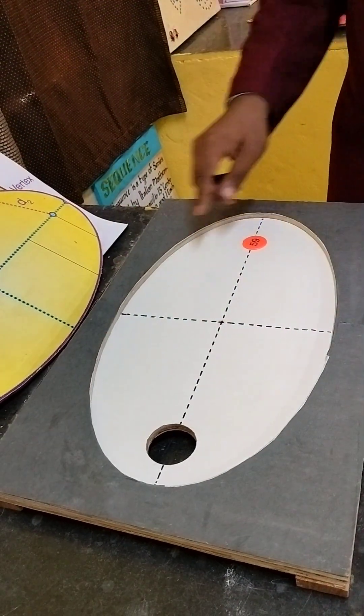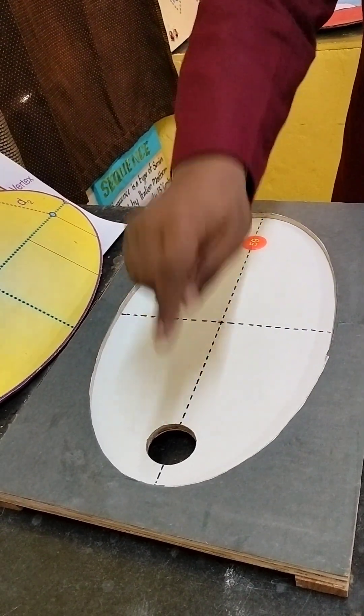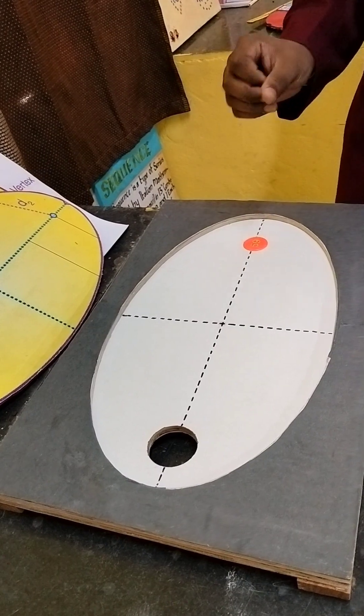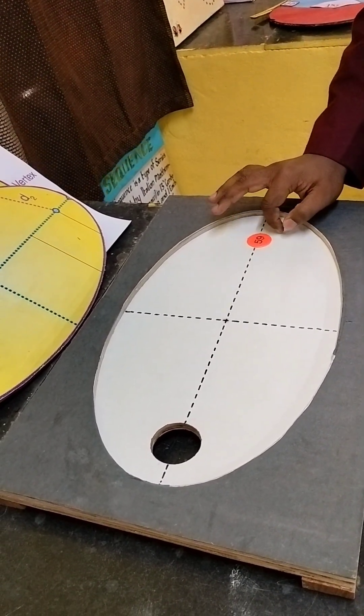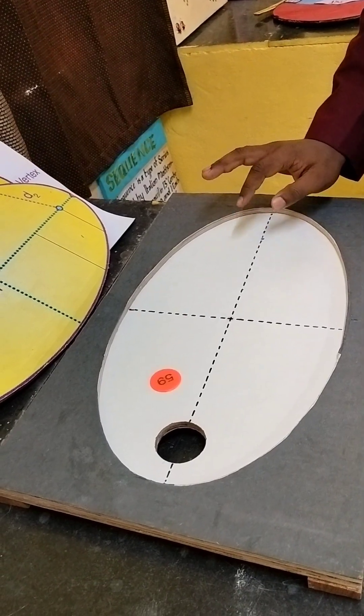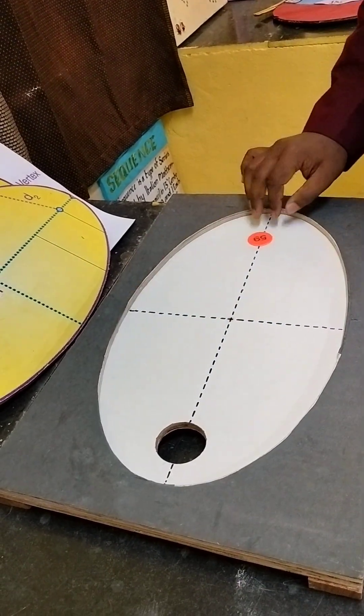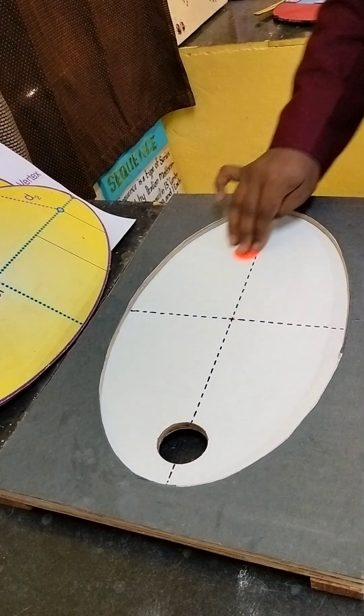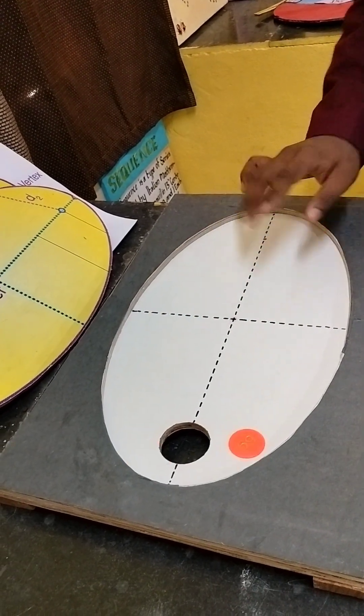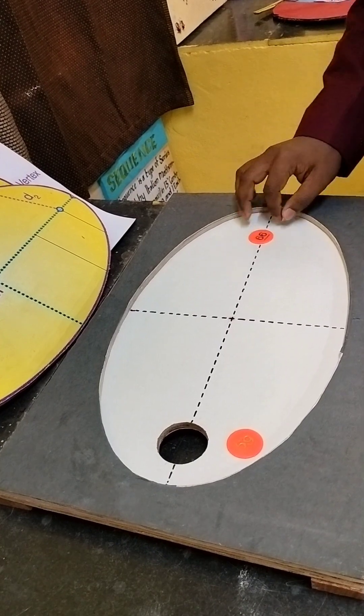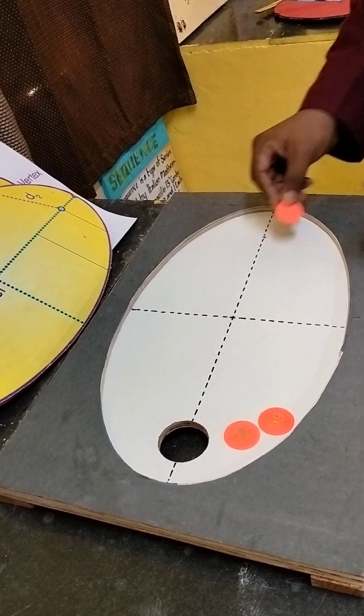Because natural conditions are not always perfect, we will have to practice it a little bit. See here, the striker always goes to that end where the hole is.